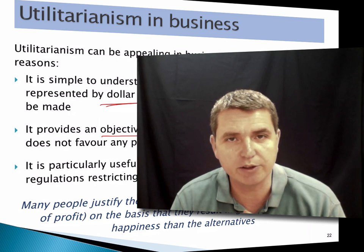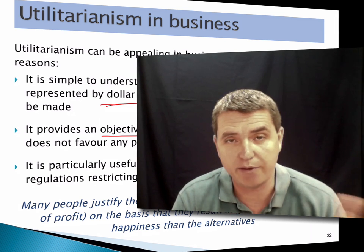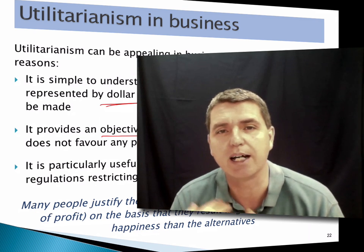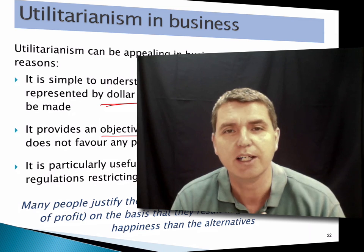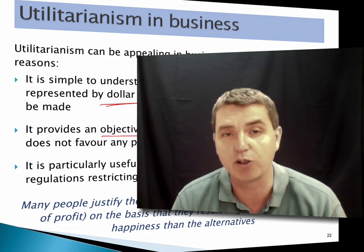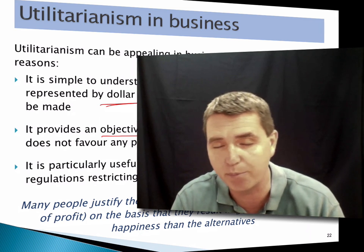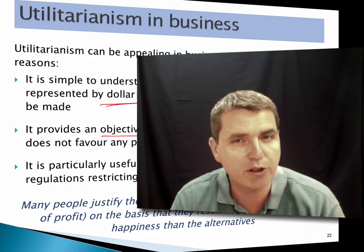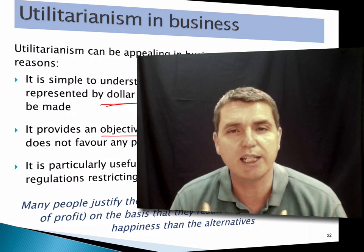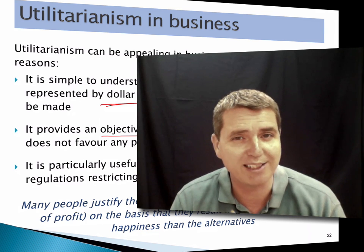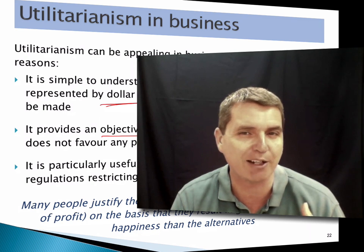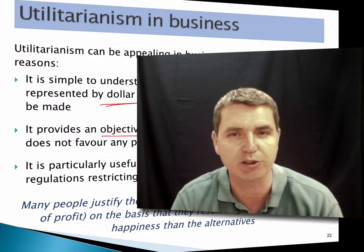Hopefully that's given you a quick introduction to those two consequentialist theories: ethical egoism, where we look at the effect on the individual — particularly me — when looking at alternative courses of action; and utilitarianism, where we look at the effect of our action on all the parties who will be affected by it. Next, we're going to look at an alternative way of thinking through ethical acts from a deontological perspective, where we don't really look at the consequences but work out whether what we're doing is actually ethical irrespective of those consequences.